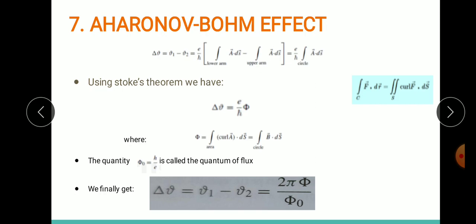The term e/ℏ is a constant. I'm defining a new variable Φ₀ = h/e, which I name the quantum of flux. Finally, the change in phase is delta φ = φ₁ - φ₂ = 2πΦ/Φ₀.